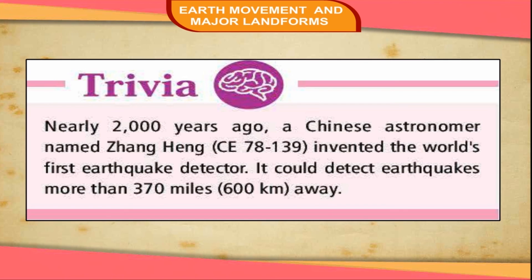Trivia: Nearly 2,000 years ago, a Chinese astronomer named Zhang Heng (CE 78–139) invented the world's first earthquake detector. It could detect earthquakes more than 370 miles (600 kilometers) away.